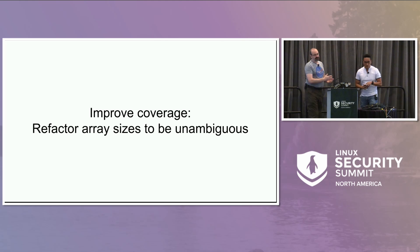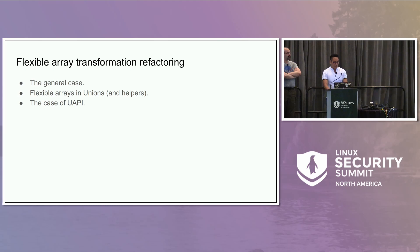Now let's look at how we are transforming these arrays. The most benign example: we have a struct foo that contains a one-element array whose element type is struct bar. We are allocating memory through kmalloc for the whole structure and a number of elements for the array.